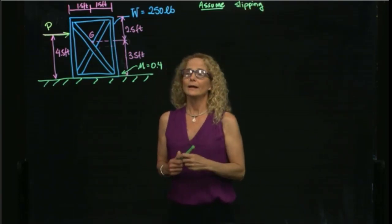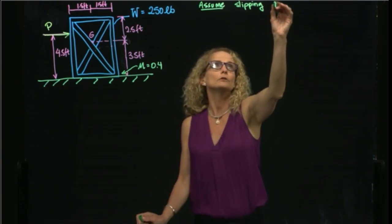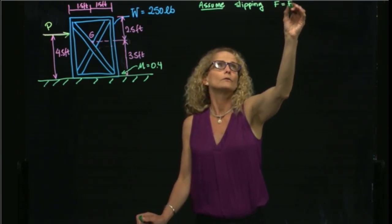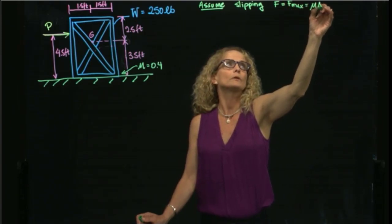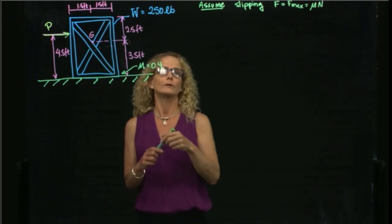So when we assume that the crate slips, we will assume that the friction force is equal to the friction force max, and that's equal to mu times N in this area. So let's do this free body diagram.